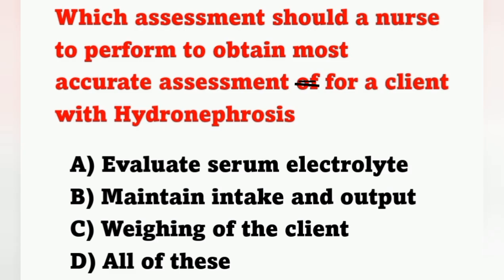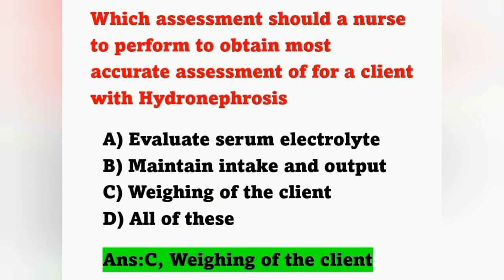Which assessment should a nurse perform to obtain the most accurate assessment for a client with hydronephrosis? Option A: evaluate serum electrolytes, option B: maintain intake and output, option C: weighing of the client, option D: all of the above. The most accurate assessment is daily weighing of the client. Option C is the correct answer.